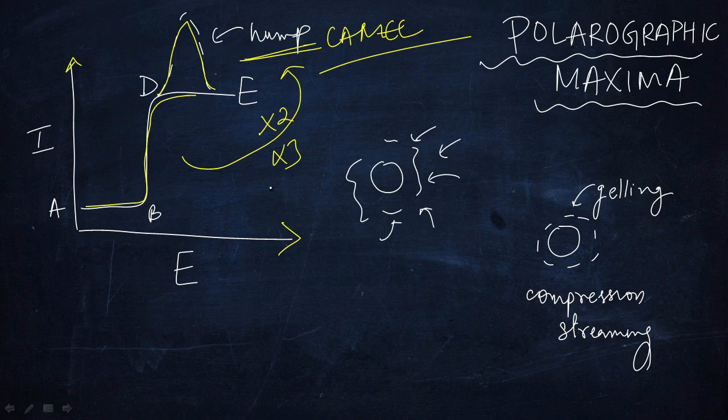What happens is when a drop of mercury falls into the solution, it isn't supposed to cause any motion. Whatever diffusion current is, it should be because of diffusion. But when a drop falls into the test solution, if you hit a stone in the water, agitation happens.